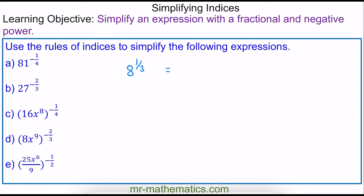To evaluate this we're going to write it as a root — this is the third root. The three comes from our denominator. So this is the third root of our base, the third root of 8, raised to the power of 1. This 1 comes from our numerator. The cube root of 8 is 2, and 2 raised to the power of 1 is 2.